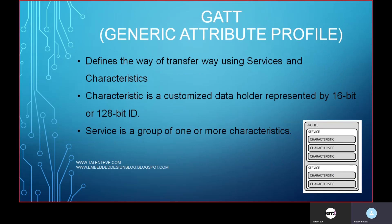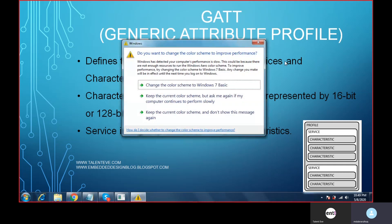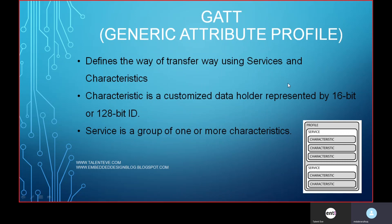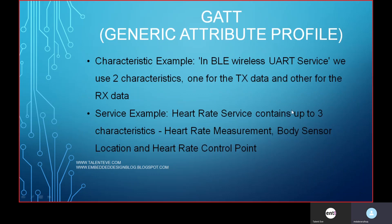GATT — Generic Attribute Profile — handles communication once the device is discovered and connected. GATT defines the data transfer mechanism between devices using services and characteristics. A Characteristic is the data holder, represented by a 16-bit or 128-bit UUID. A Service is a group of characteristics — a group of customized data holders. As shown in the diagram, a Service is a group of Characteristics, and a Profile is a group of Services.